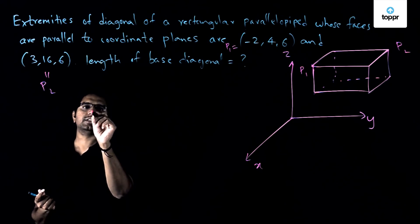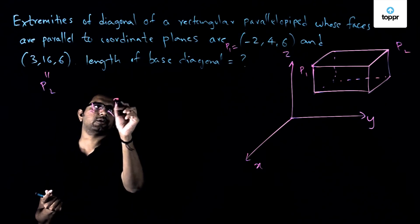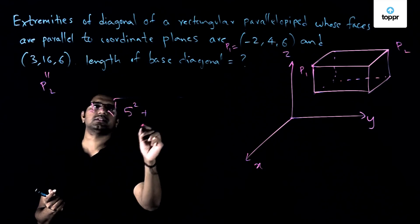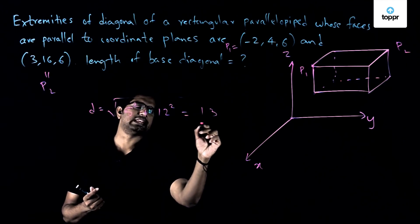So we have the diagonal is equal to the square root of, so we are looking at 5 square plus 12 square, so which is equal to 13.